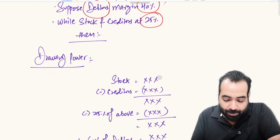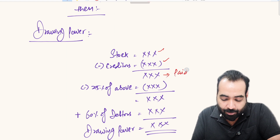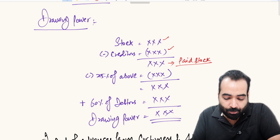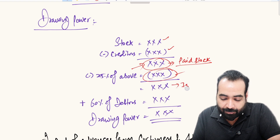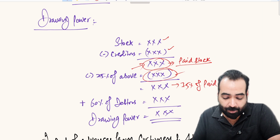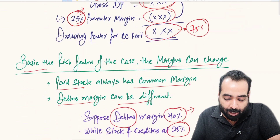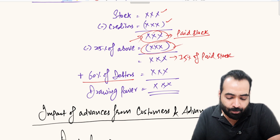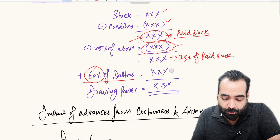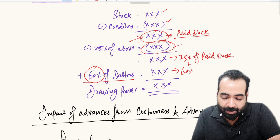First, pick up stock and deduct creditors from it to get paid stock. Apply 25 percent margin on paid stock — deduct 25 percent, and the remaining 75 percent of paid stock is your drawing power on paid stock. Then, for debtors, pick up the debtors as per the cycle allowed by the bank and either deduct 40 percent from the total or directly calculate 60 percent of the debtors.